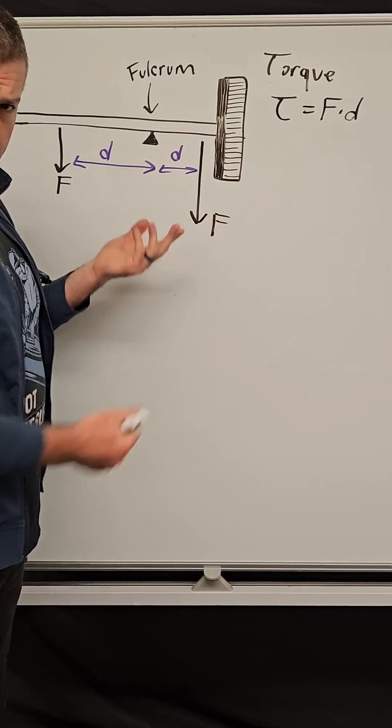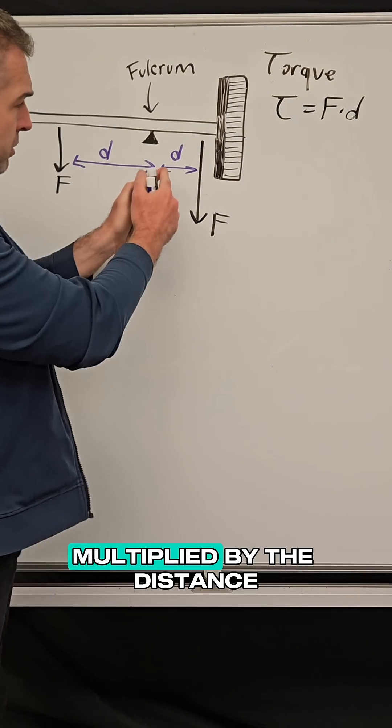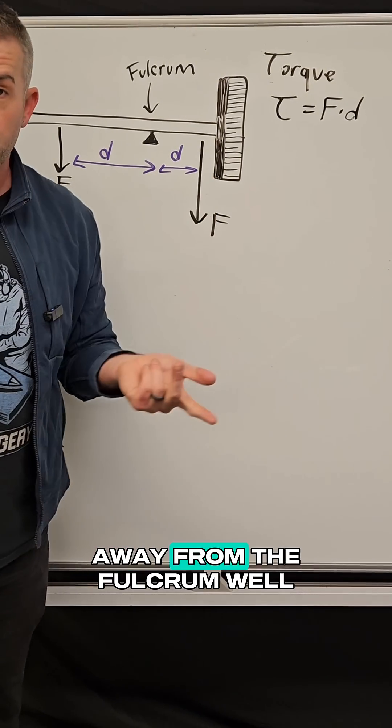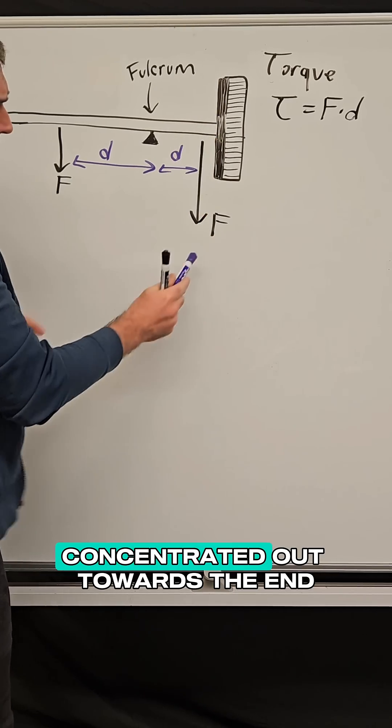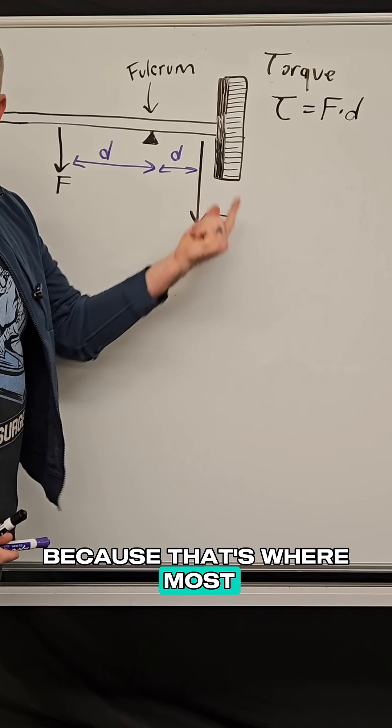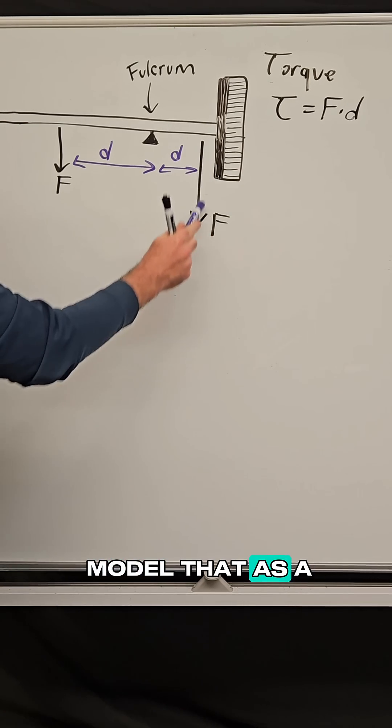Which means there's a force, which in this case is the weight, multiplied by the distance away from the fulcrum. Well, what do we notice? Well, the broom head has most of its weight concentrated out towards the end because that's where most of the weight is. And so you can model that as a force here.